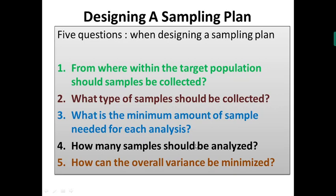The fifth and very important question is: whatever sampling plan you devise, the overall variance must be minimized. By minimizing variance we can increase precision. If precision is more, accuracy will be at the higher end, provided we follow the analytical procedure appropriately. If precision is more, deviation will be less; if deviation is more, precision will be less. These five questions — from where, what type, how much, how many, and how to minimize variance — must be addressed while designing a sampling plan.